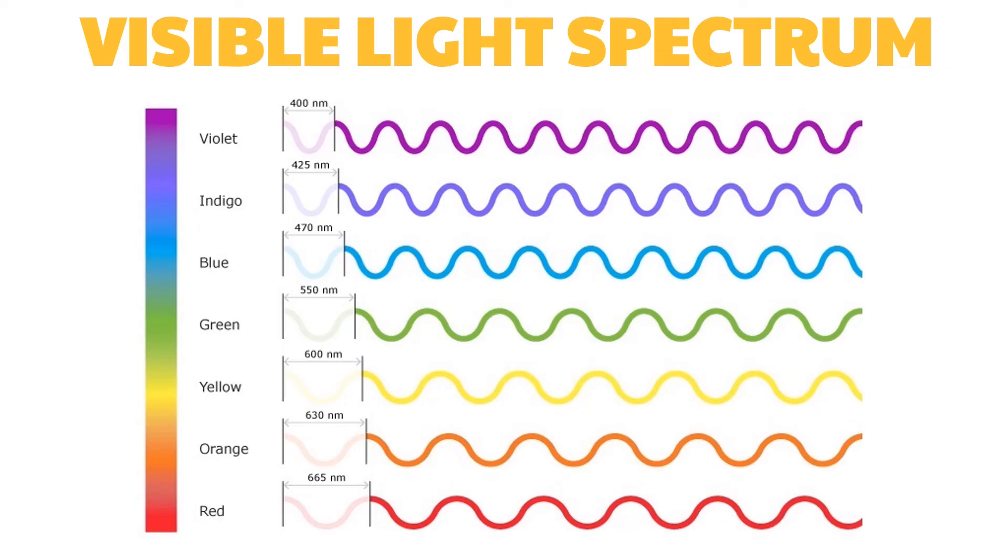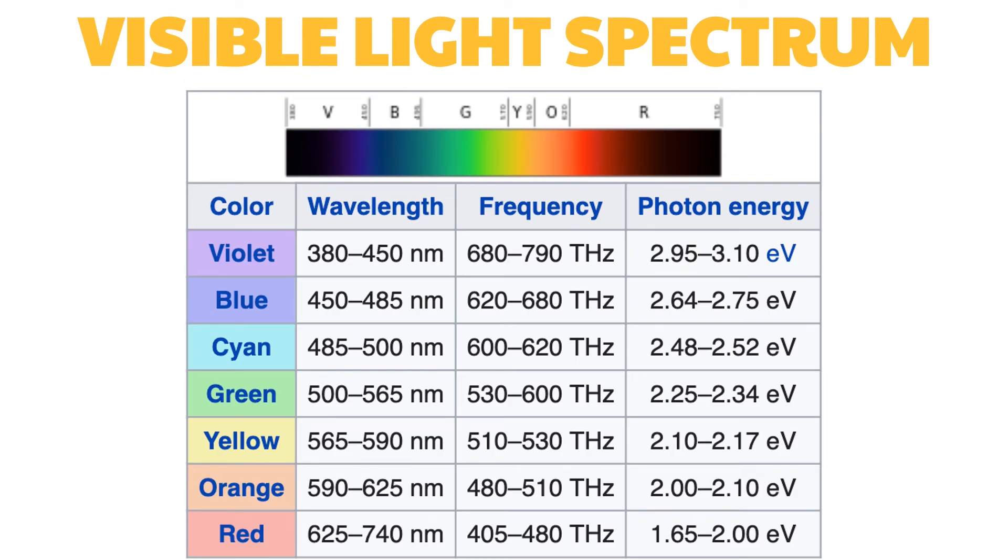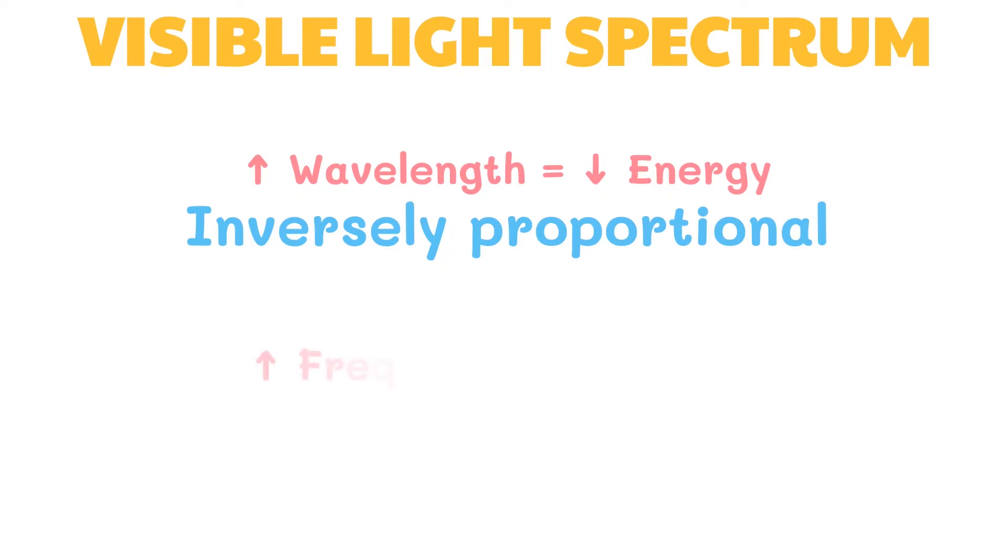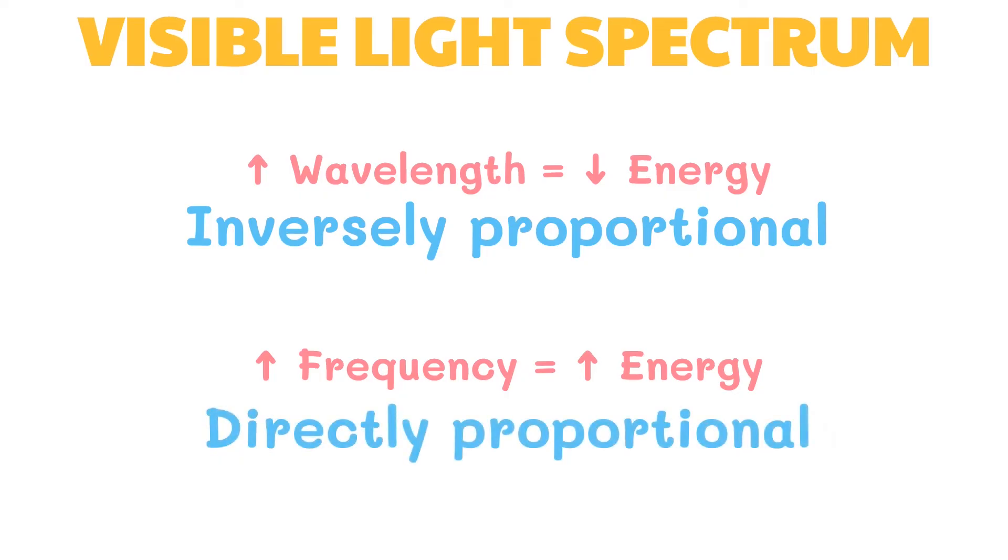Take a look at this illustration. Each color corresponds to a given wavelength and frequency. Red light has the highest wavelength and lowest frequency, while violet light has the lowest wavelength and highest frequency. When we relate it to this table, red light, which has the highest wavelength and lowest frequency, has the lowest energy, while violet light, which has the lowest wavelength and highest frequency, has the highest energy. Thus we can say that the higher the wavelength, the lower the energy, which means that wavelength and frequency are inversely proportional. On the other hand, the higher the frequency, the higher the energy. Frequency and energy are directly proportional to each other. This is why red has the lowest energy while violet has the highest energy.